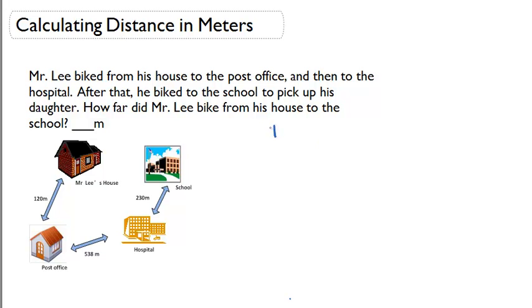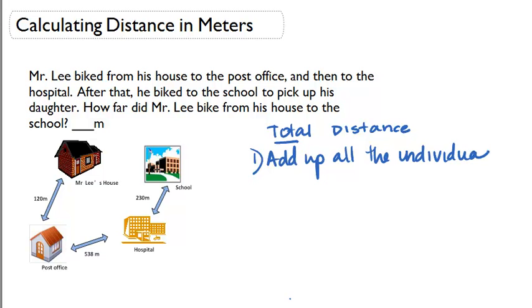So we want to know what is the total distance that Mr. Lee biked. To find the total distance we are going to have to add up all the individual distances. And we do this by looking at the map.